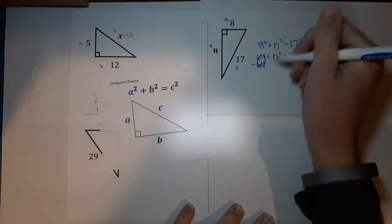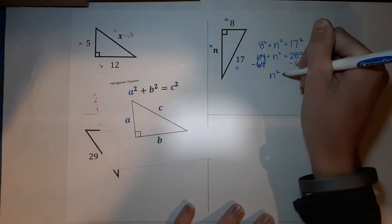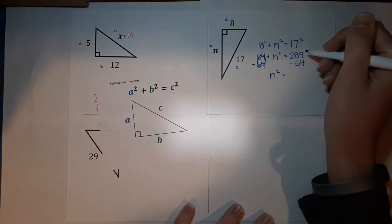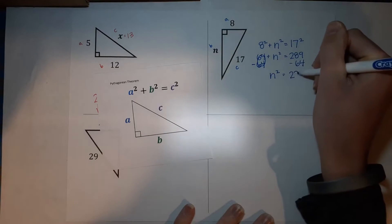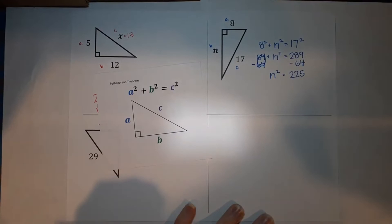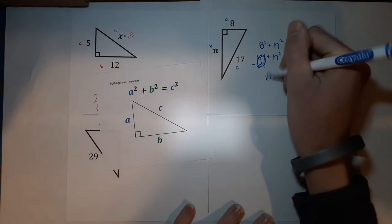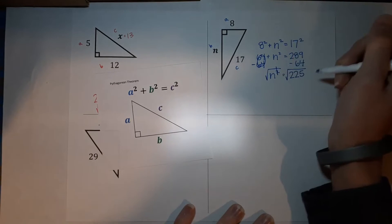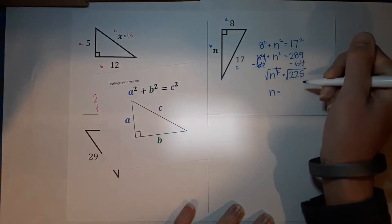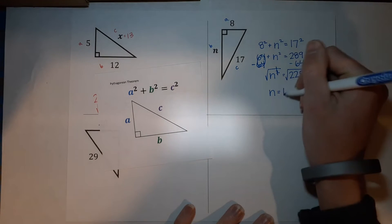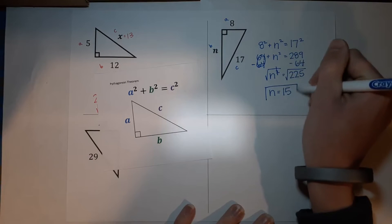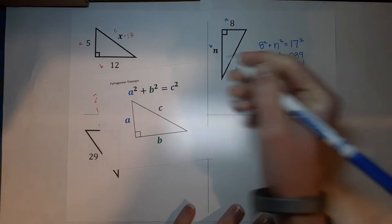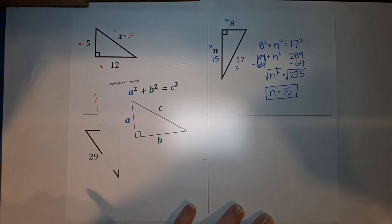So left over here, I just have N squared. 289 minus 64 is 225. Am I done? Not quite. N squared is not N. So to get rid of the squared, I'm going to do the square root. Those cancel out. So I'm just left with an N and the square root of 225 is 15. Look at that. You're done. So N is 15.